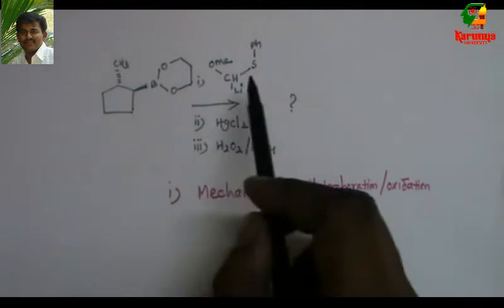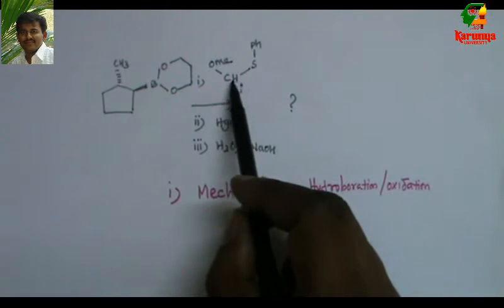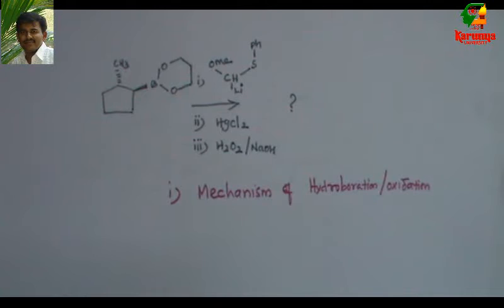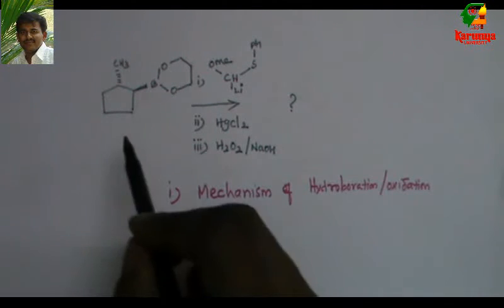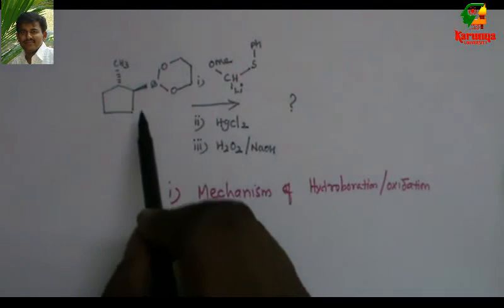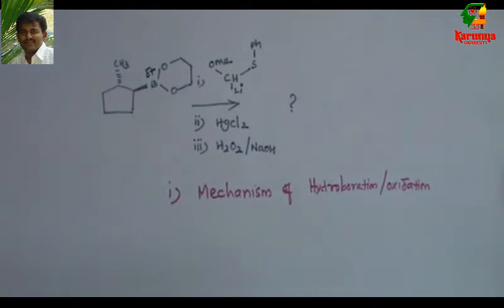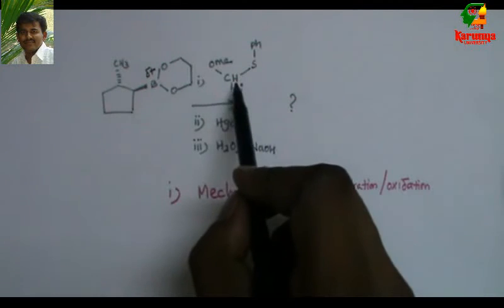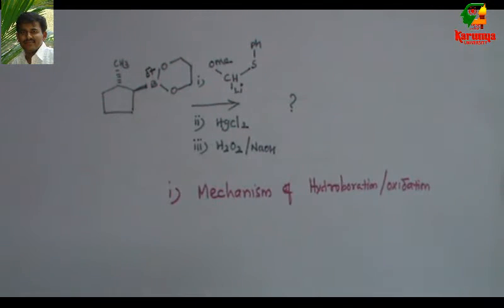In this compound, the first step, this boron is attacked by this lithium anion. What is the electrophilic position in this compound? There is no CO or there is no C double bond O or there is no leaving group. So where is the electrophilic position? Since it is boron compound, this is delta plus. So the compound has to attack here. If you recall the mechanism of hydroboration oxidation, it will be very useful for you now.